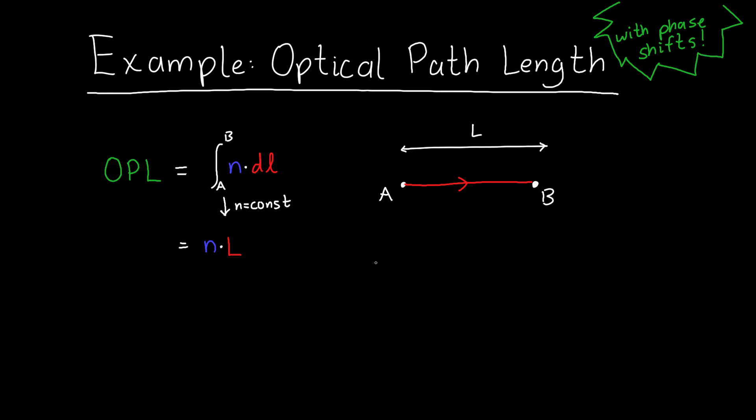Remember that optical path length is just the distance that light thinks it travels, because light changes its wavelength. Its wavelength goes down in higher index materials, so light thinks that it travels further when it's traveling through a high index material. We can calculate this distance that light thinks it travels by taking the integral of N times DL. Usually the refractive index is constant, so that will give us N times L, where N is our refractive index and L is the distance that the light had traveled. N is our refractive index of the surrounding medium.